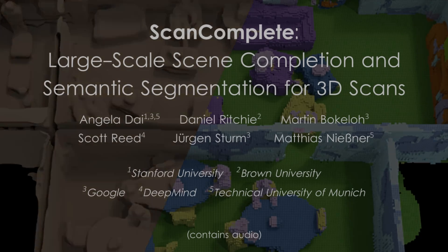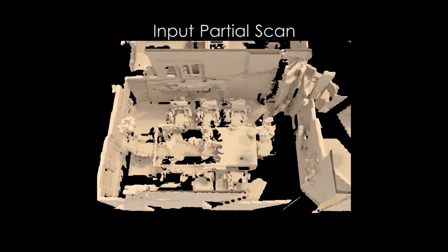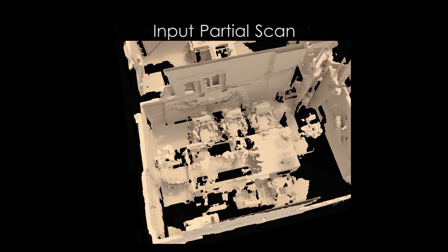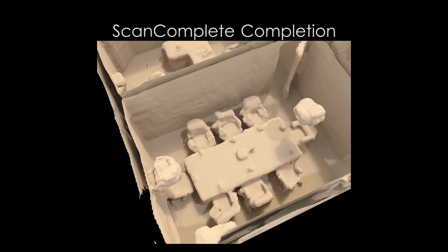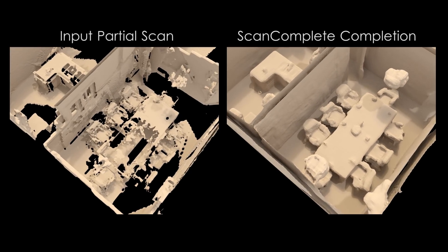We present ScanComplete, a method that takes an incomplete 3D scan of a scene of arbitrary spatial size, and predicts a complete 3D model along with per-voxel semantic labels.